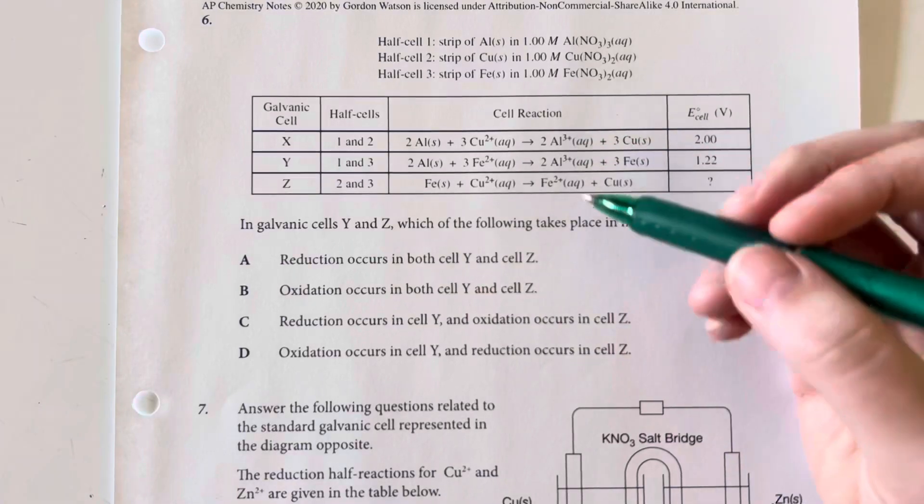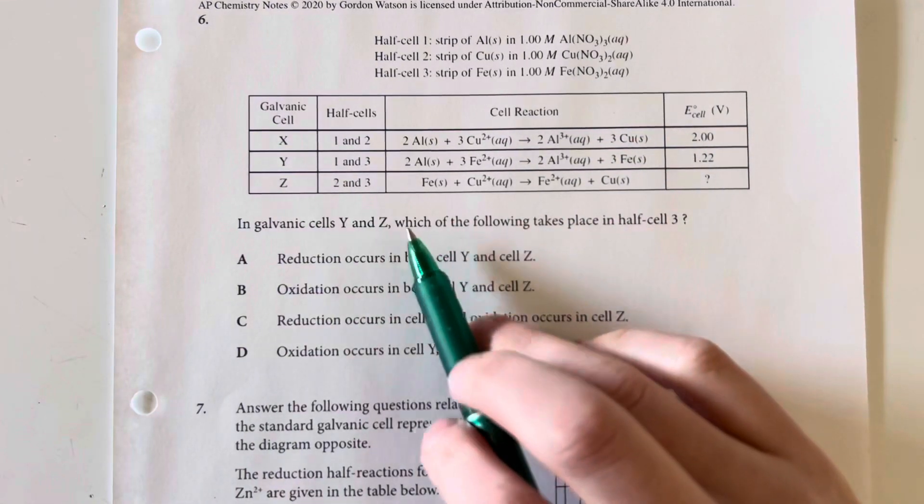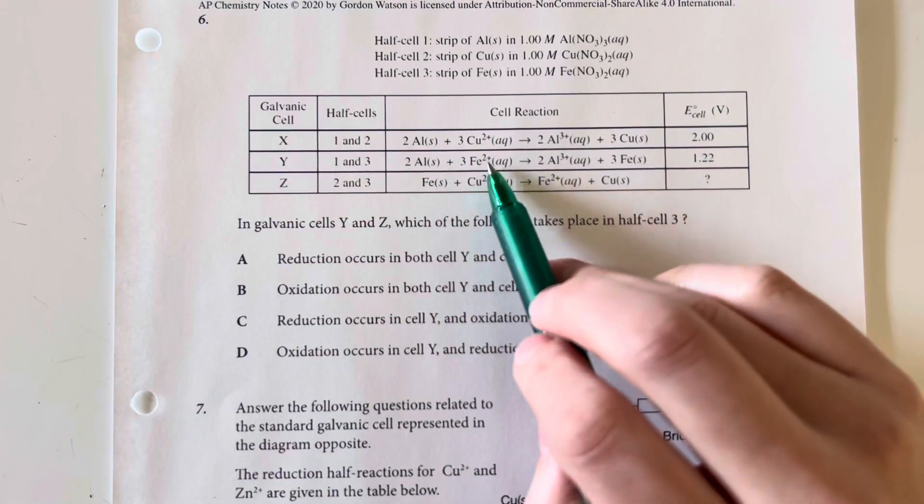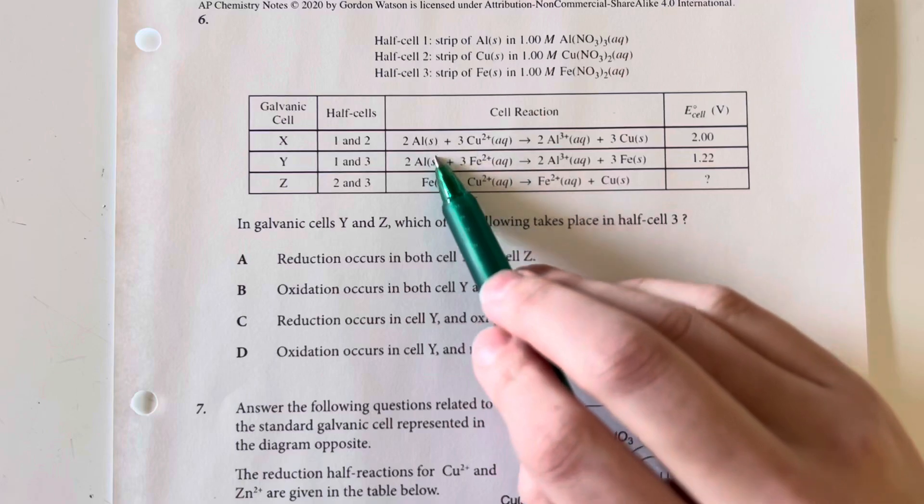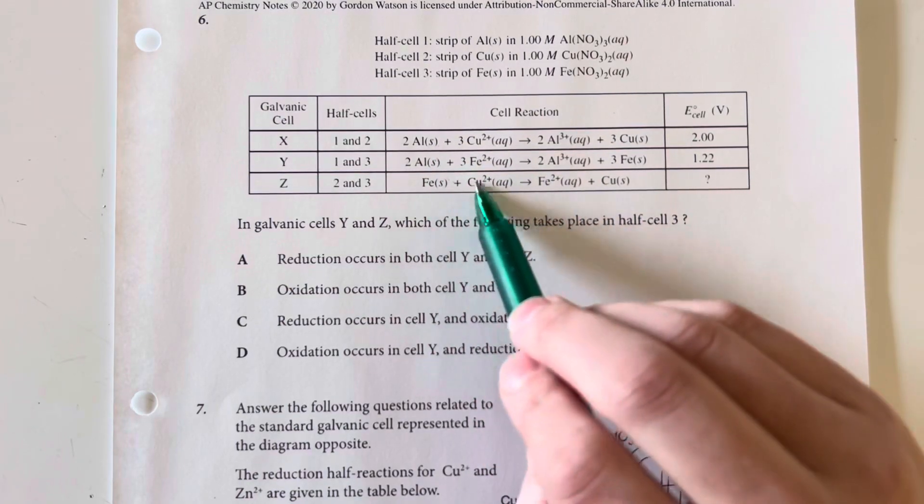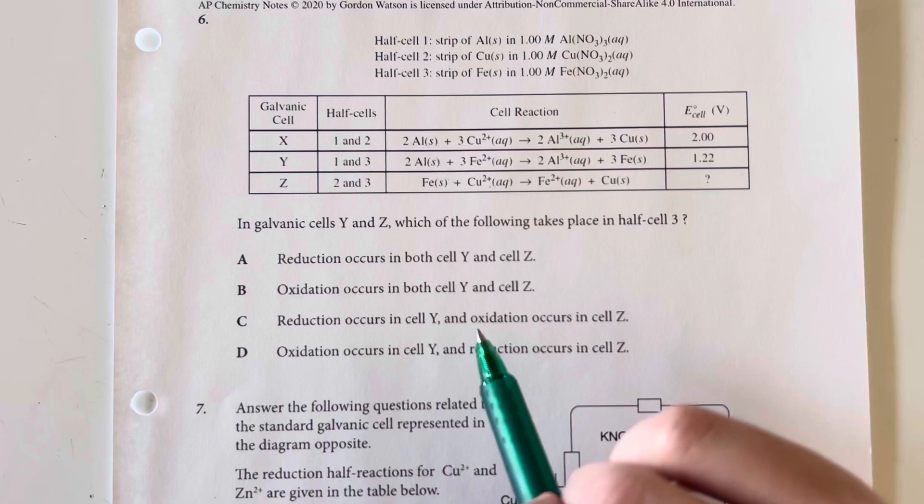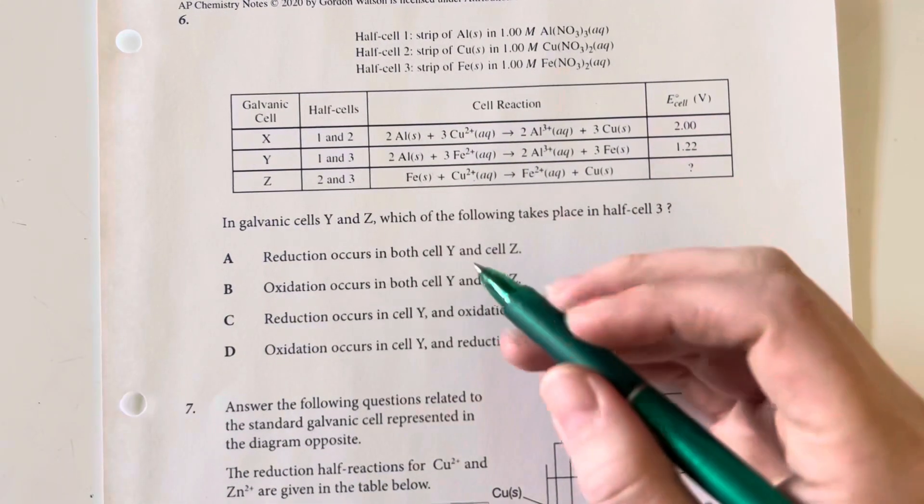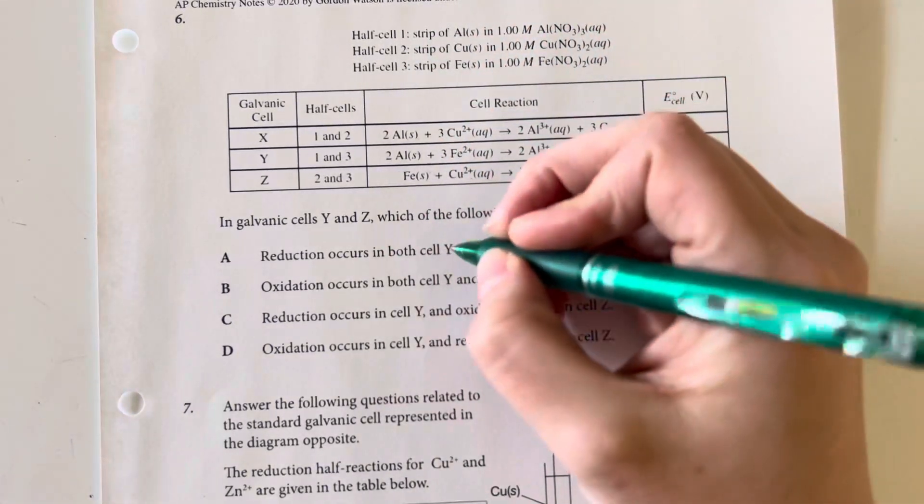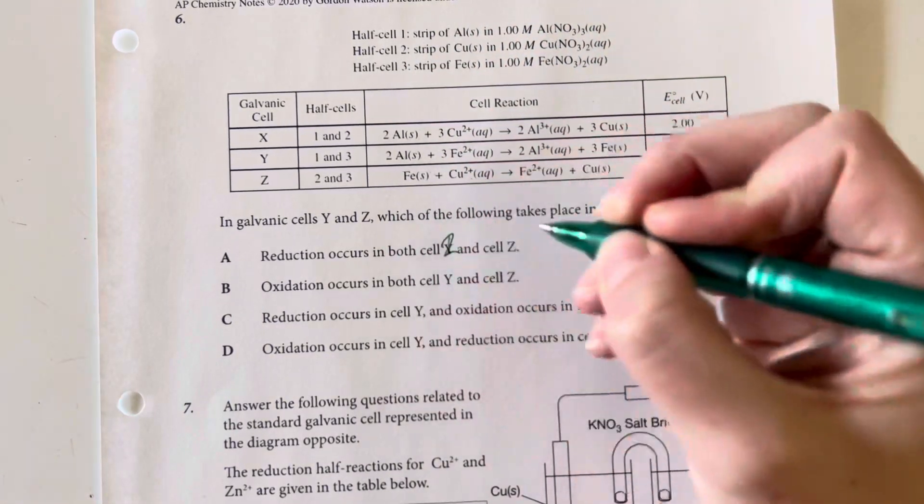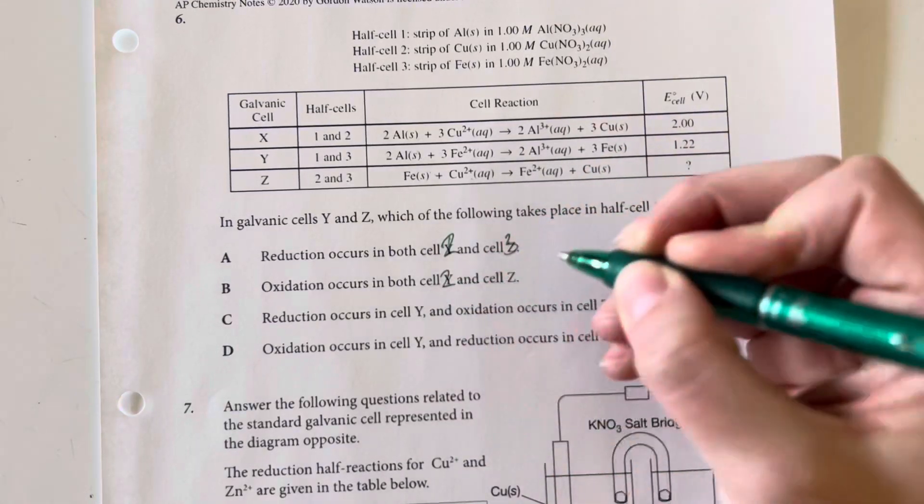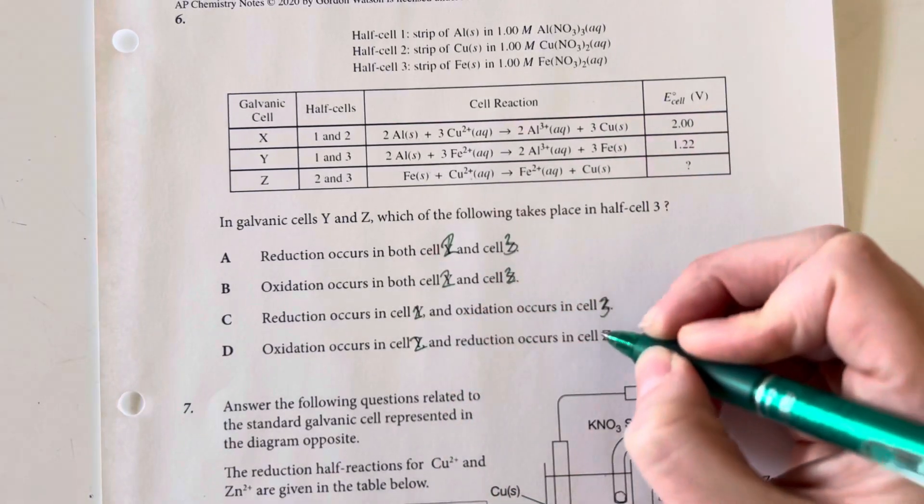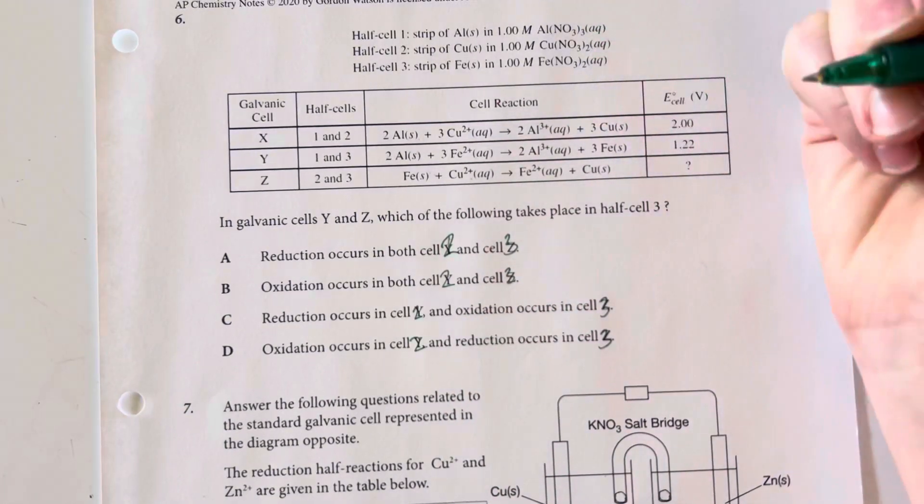I'm looking for what would occur if I went from aluminum to iron and copper. I think they mean half cells 1, 2, and 3, so I'll replace them with their respective numbers as those are the half cells referenced. In galvanic cell Z, I'm dealing with half cells 2 and 3.